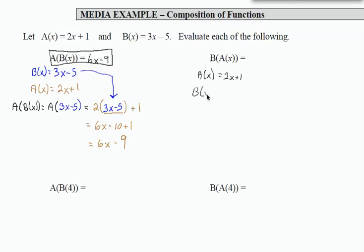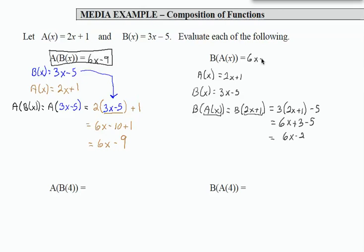And b of x, that's the outside part, is 3x minus 5. So function b says to take 3 times the input and subtract 5. So b of a of x is b of 2x plus 1. The 2x plus 1 takes the place of a of x on the inside. Now I apply 2x plus 1 into function b. That becomes 3 times the input, 2x plus 1, minus 5. Then I just distribute and combine like terms. I get 6x plus 3 minus 5, which is 6x minus 2. That is my final result for b of a of x.